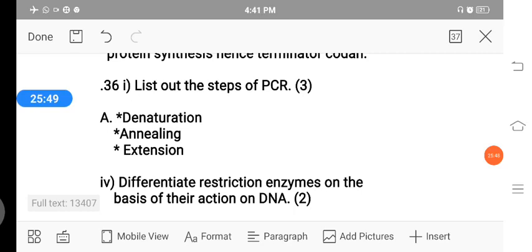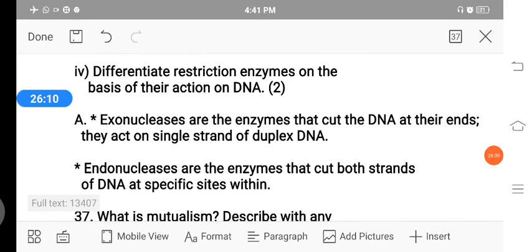Then 36th question, list out the steps of PCR. It carries three marks. The first step is denaturation, second annealing, third extension. Then the two mark question is, differentiate restriction enzymes on the basis of their action on DNA. The restriction enzymes, first one exonucleases. These are the enzymes that cut the DNA at their ends. They act on single-stranded or duplex DNA. Second, the endonucleases. These are the restriction enzymes that cut both strands of DNA at specific sites within. These are the two enzymes that act on DNA.